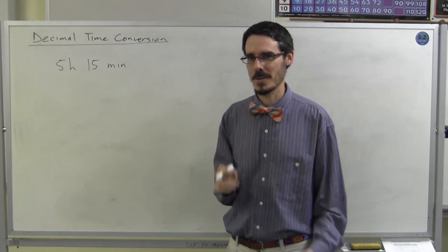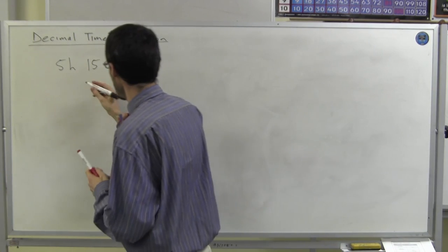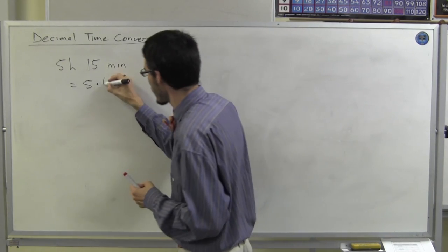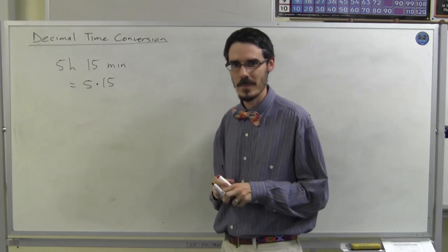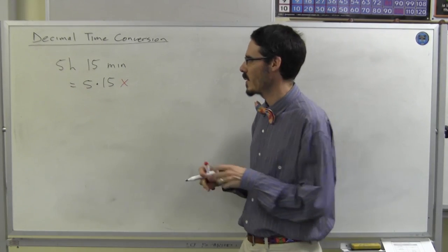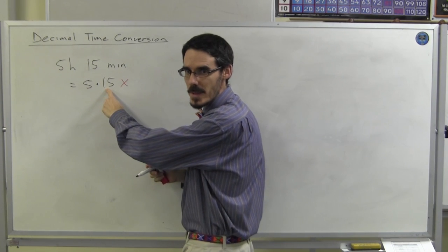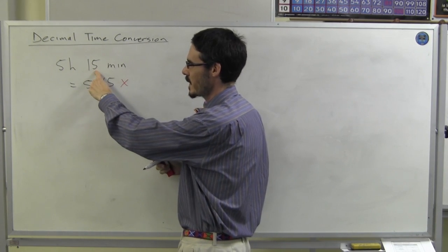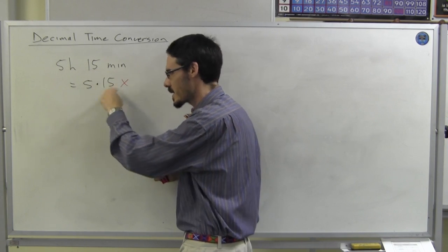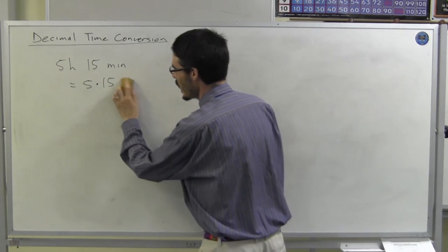Some people will try to do this, this is not correct, don't do this. They try to go 5.15. This is not correct, why not? Well because this is 15 hundredths, but this is 15 minutes which is 15 sixtieths of an hour. It's not 0.15, never has been, never will be.